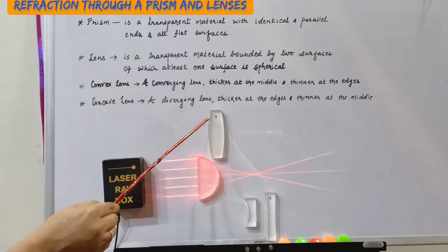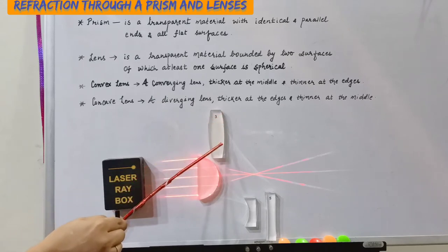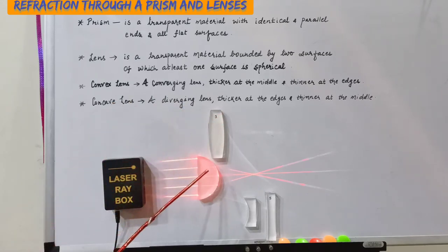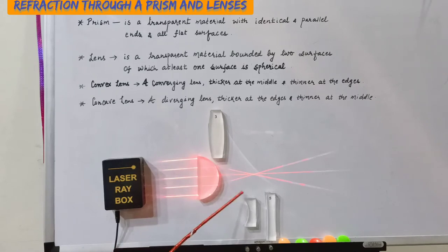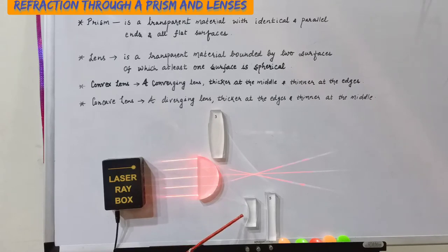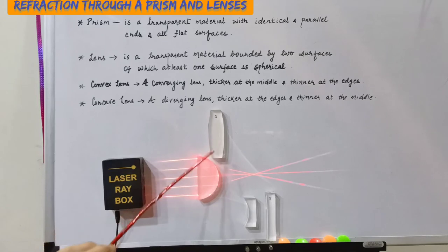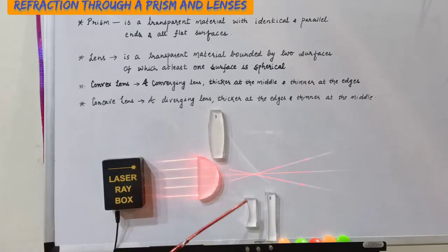A convex lens is a lens which is thicker at the middle and thinner at the edges. A concave lens is a lens which is thicker at the edges and thinner in the middle. These two are convex lenses and these two are concave lenses.